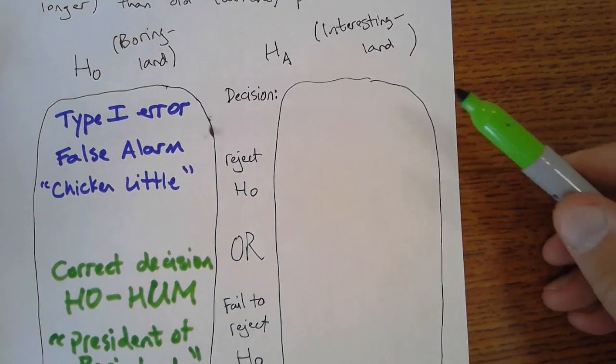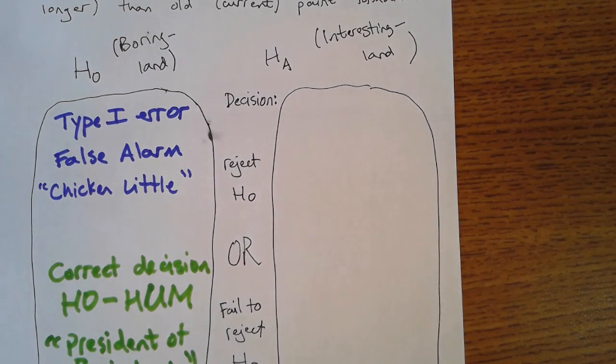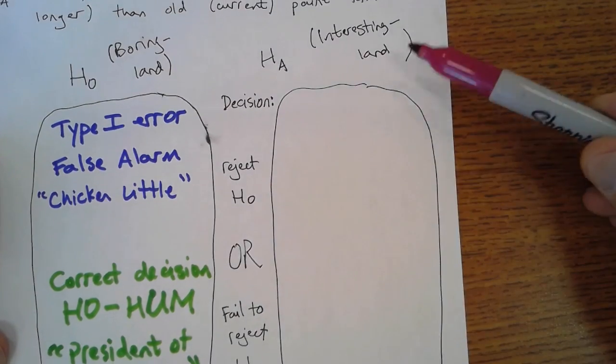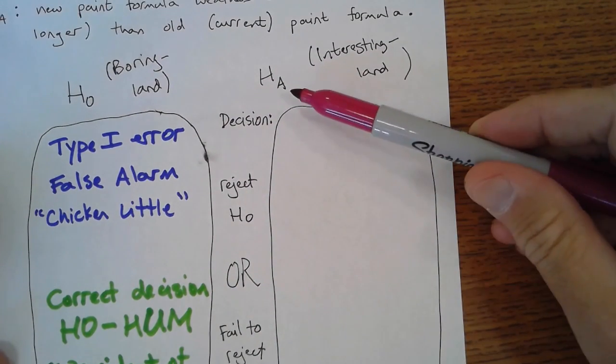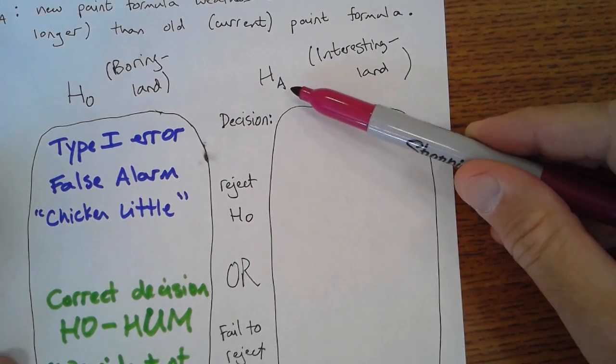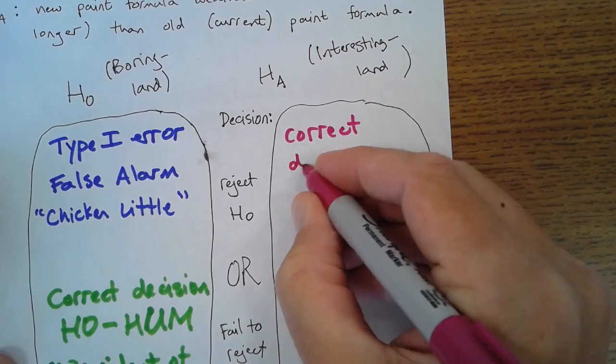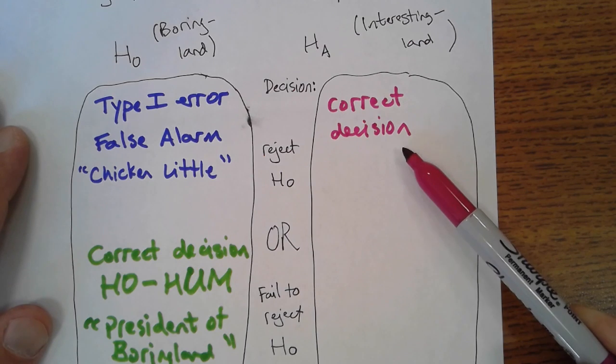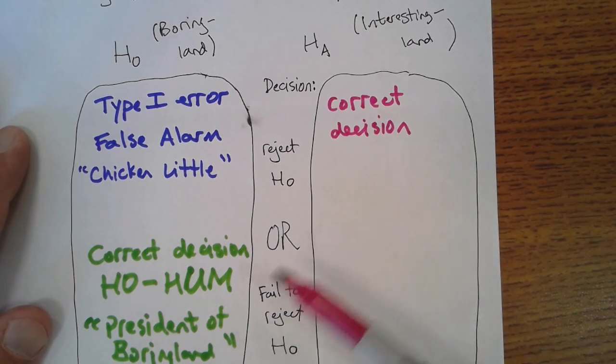What if we live in interesting land? What if this is the reality? The new paint really does work better than the old. Well, we'd sure love to be able to show that. If we do show that, if our data do lead us to reject the null hypothesis and conclude, aha, this paint formula, this new one works better than our current one, that's a correct decision.